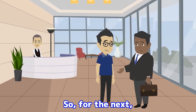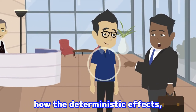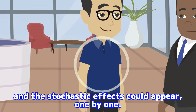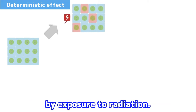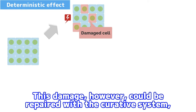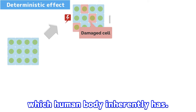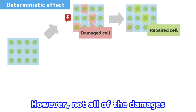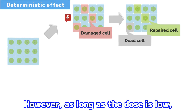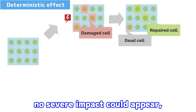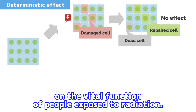For the next, let me elaborate on the mechanisms of how the deterministic effects and the stochastic effects could appear, one by one. First of all, let us start with the deterministic effect. Every single cell has genetic information as DNA, and part of the DNA could be damaged by exposure to radiation. This damage, however, could be repaired with a curative system which the human body inherently has. However, not all of the damages would be completely repaired into original condition — part of the DNA could be repaired, or sometimes cells become dead. As long as the dose is low and the number of damaged cells is small, no severe impact could appear on the vital function of the exposed person.